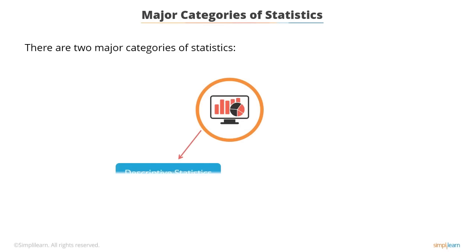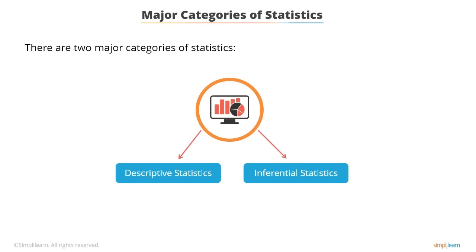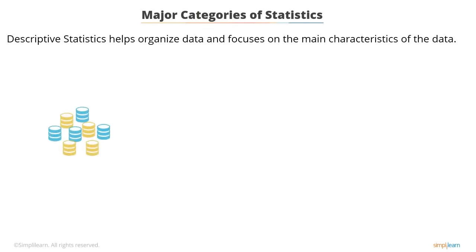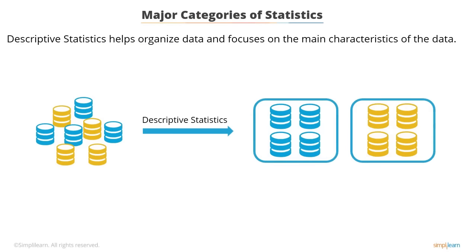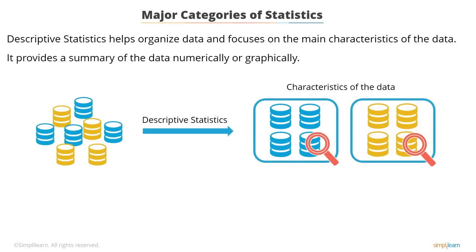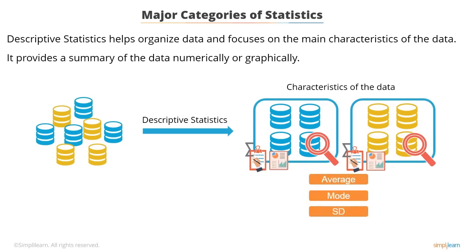Although both forms of analysis provide results, statistical analysis gives more insight and a clearer picture, a feature that makes it vital for businesses. There are two major categories of statistics: descriptive statistics and inferential statistics. Descriptive statistics helps organize data and focuses on the main characteristics of the data, providing a summary numerically or graphically.